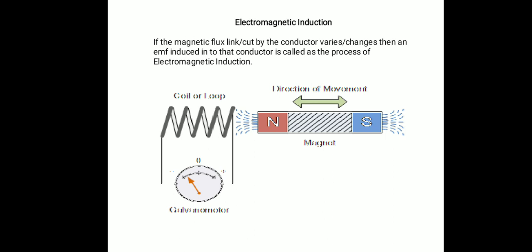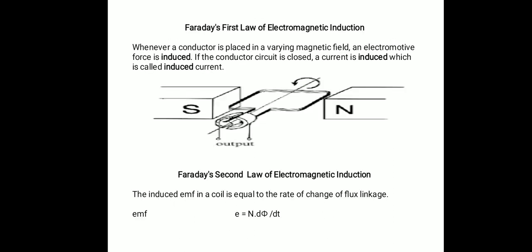In simple terms, you can remember it as: if the flux which is varying or changing in nature is linked to any conductor, EMF is induced into that conductor — that process is called as electromagnetic induction. Regarding electromagnetic induction, there are two laws: Faraday's first law and Faraday's second law.